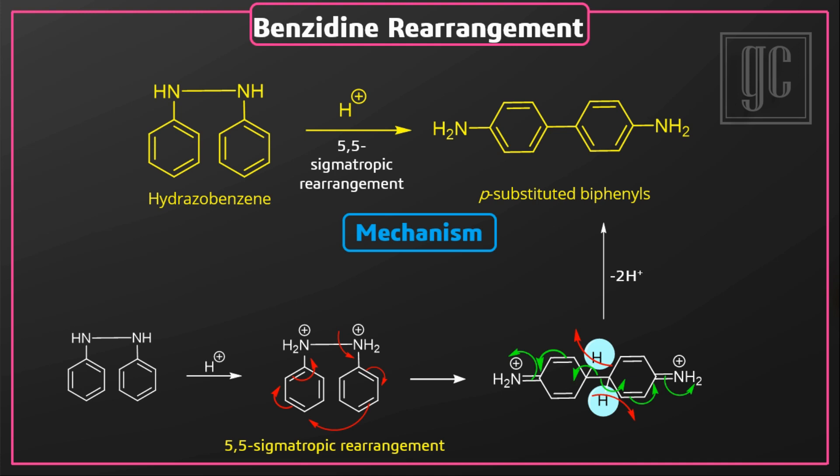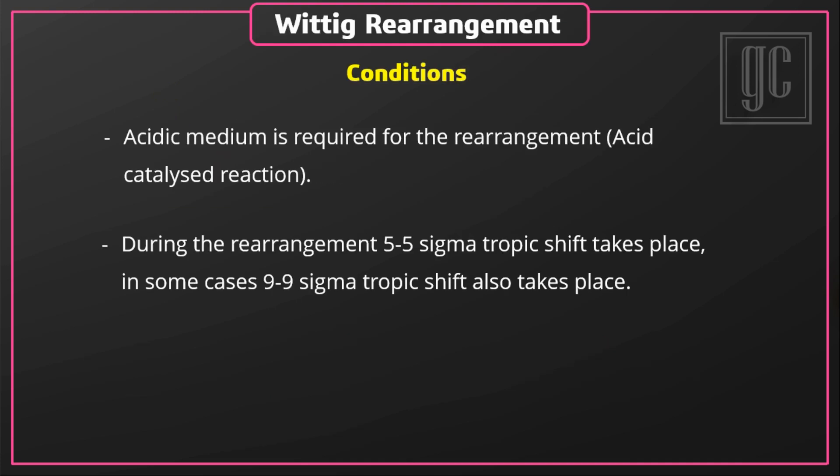The conditions required for the rearrangement: an acidic medium is required. During the rearrangement, a [5,5]-sigmatropic shift takes place, and in some cases a [9,9]-sigmatropic shift also takes place.